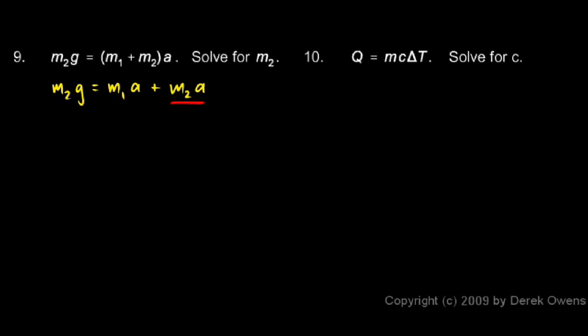So I need to subtract m₂a from each side to do that. So I have minus m₂a on both sides. On the right, these will cancel out, and that leaves me with m₂g minus m₂a equals m₁a.